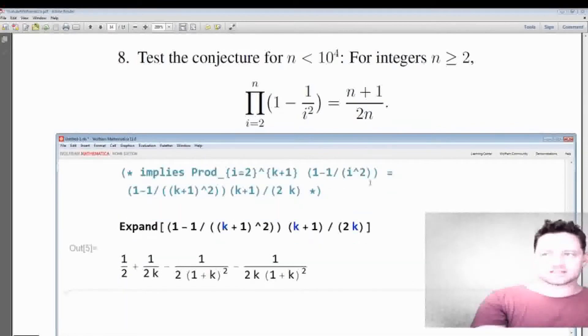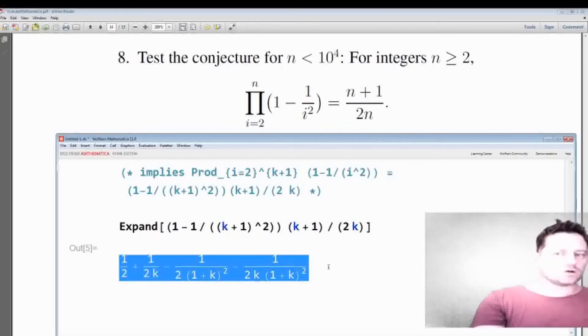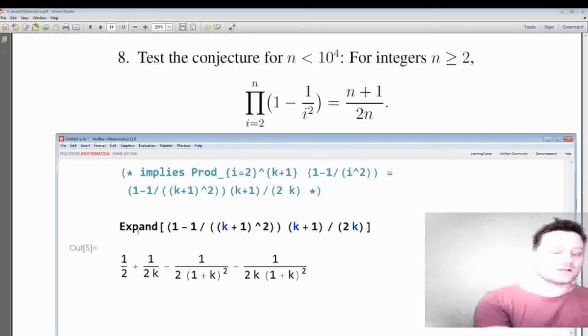All right, now what would I like to do? Maybe I would like to expand, or expand, see what I get. All right, so I get this. Now this looks nothing like this formula, right? What I'm aiming for is to get k plus 1 plus 1 in the numerator and 2 outside of k plus 1 in the denominator in order to prove this by induction.